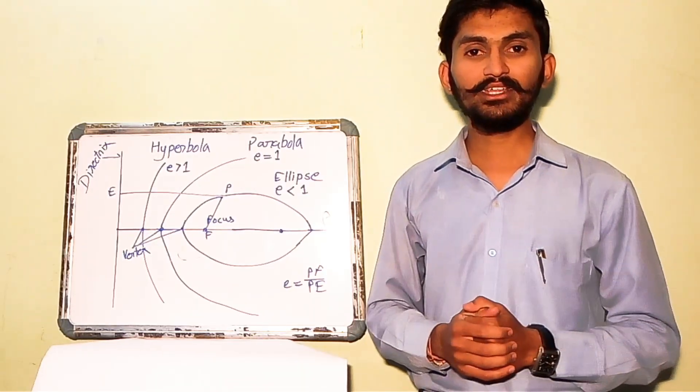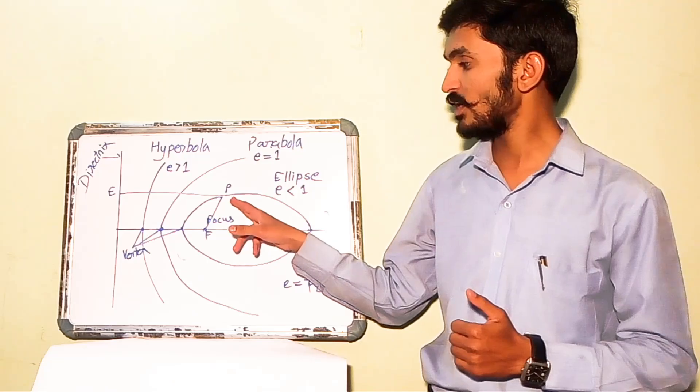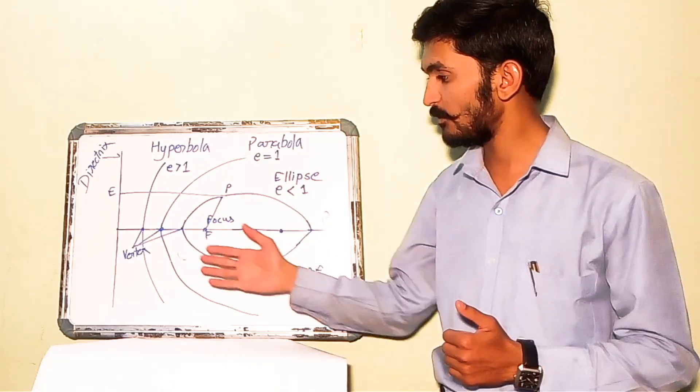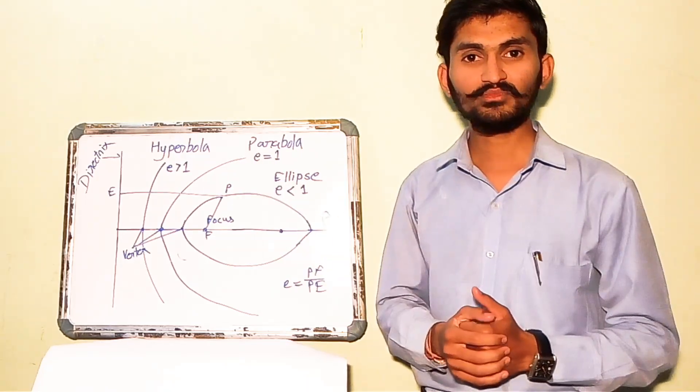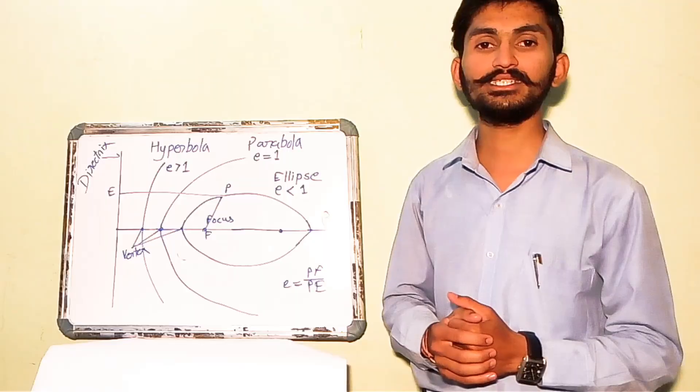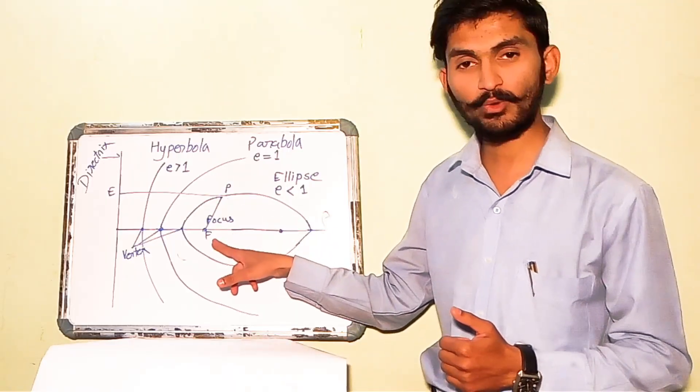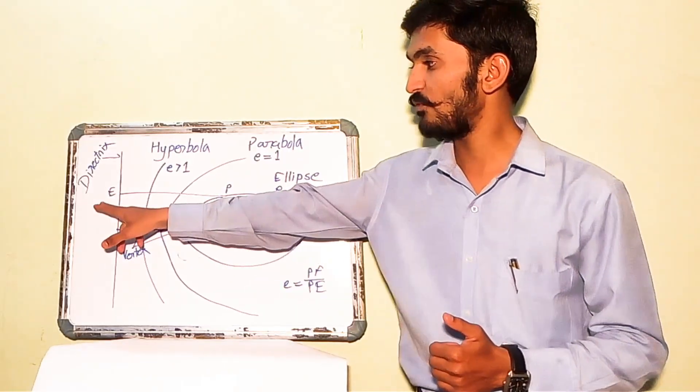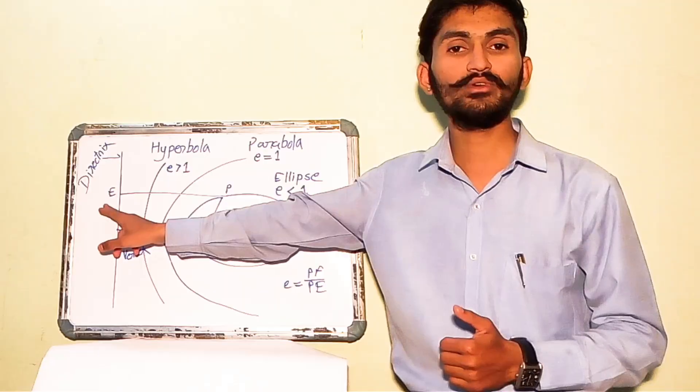Conic is defined as locus of a point moving in a plane in such a way that the ratio of its distance from a fixed point to a fixed straight line is always constant.